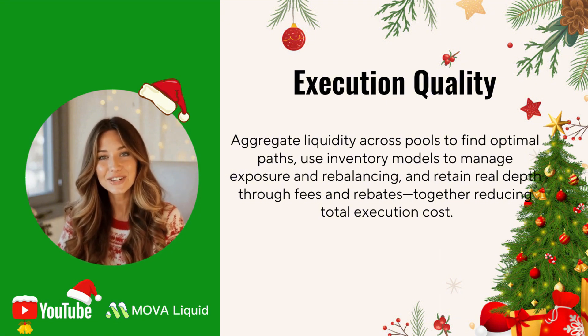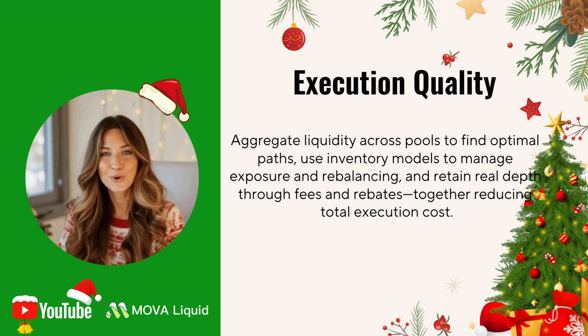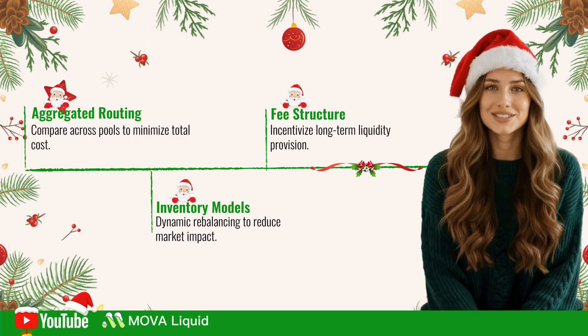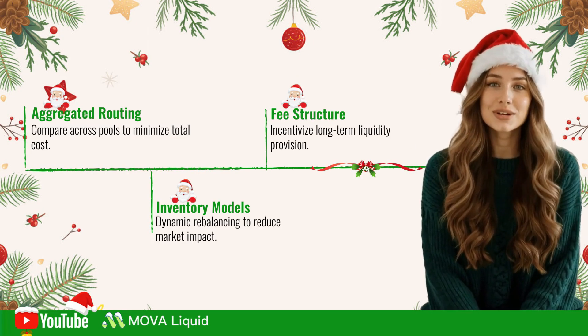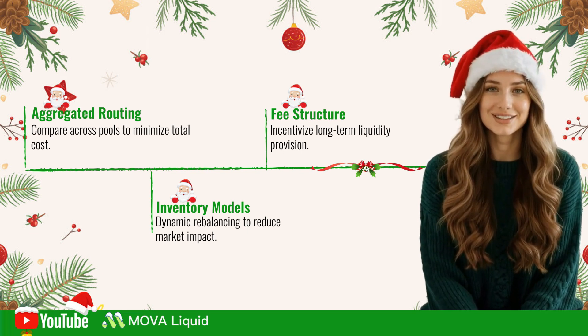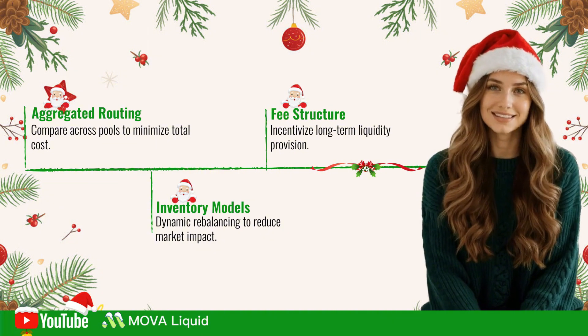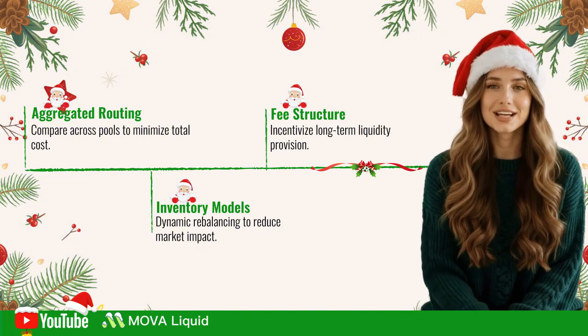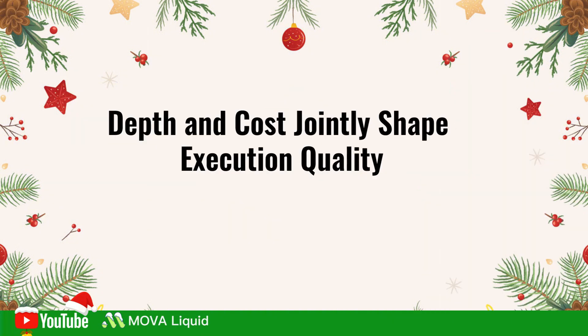When these three are tightly integrated, spreads and slippage naturally compress, and large order executability improves significantly. Routing answers where to trade. Inventory answers how to stabilize price. Fee structures answer who is willing to keep supplying liquidity. Together, they create a positive flywheel. Execution quality is determined at both ends — the supply side must provide real depth, and the path must deliver the lowest total cost.